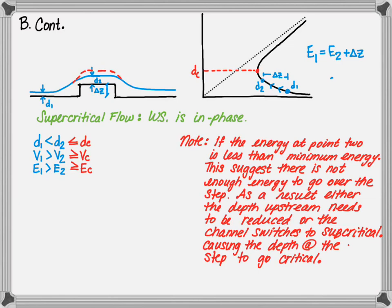Note: if the energy at point two is less than the minimum energy, this suggests there is not enough energy to go over the step. As a result, either the depth upstream needs to be reduced, or this channel will switch to subcritical flow, causing the depth at the step to go critical and requiring recalculation of the upstream depth, making this a subcritical channel. Most likely the second scenario will occur, because there is no way to physically reduce the upstream depth unless it can be controlled on the upstream side.